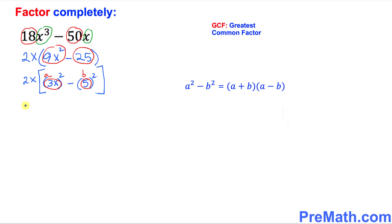So let's simplify this thing using this formula. So 2x is again outside, just leave it outside, and this could be written as 3x plus 5 times 3x minus 5. So far so good.